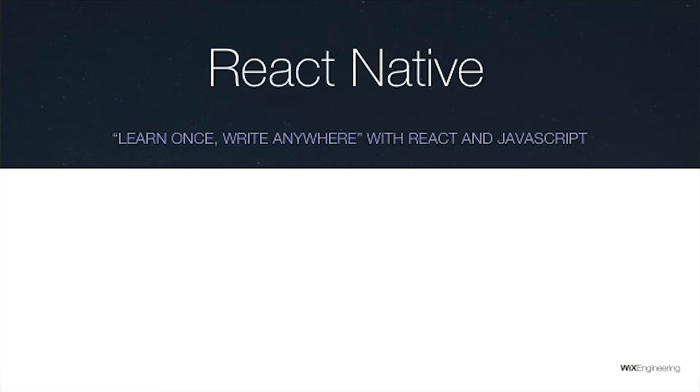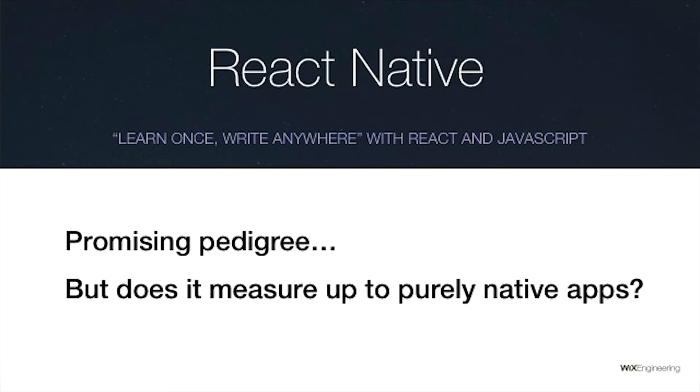Performance is critical if you want apps that compete with the best native apps — they need to feel smooth. The biggest question: can we reach that with React Native? React Native's motto is 'learn once, write anywhere' with React and JavaScript. The pedigree is very promising because it comes from Facebook — if there's one company that knows how to do mobile development at scale, it's Facebook. They have the best native developers in the world, and the fact that they're transitioning to a cross-platform language is significant. But does React Native measure up to purely native apps?